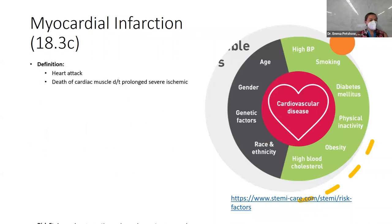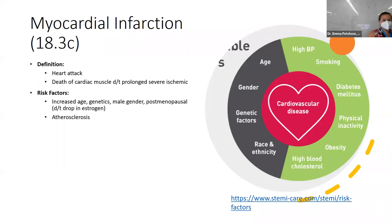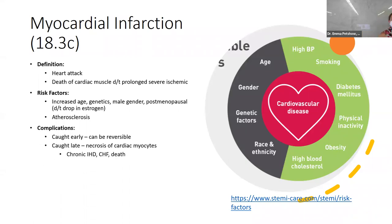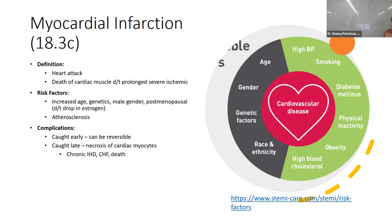Myocardial infarction is death of cardiac muscle due to prolonged severe ischemia. Risk factors include the common ones; one to keep in mind is postmenopausal state — that drop in estrogen — which is a great connection to endocrine or reproductive system questions. Complications: if caught early, it's reversible; if caught late, it results in myocyte death. It can lead to chronic ischemic heart disease, congestive heart failure, or death, but can be reversed if caught quickly.